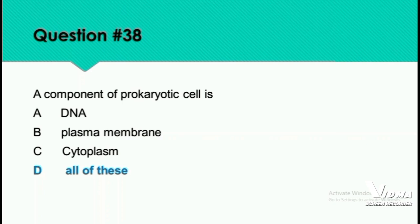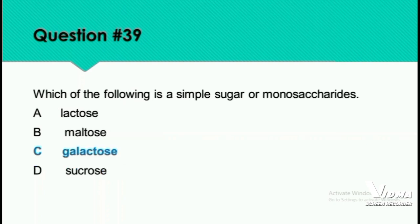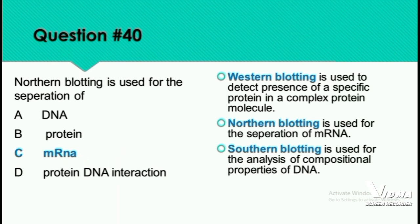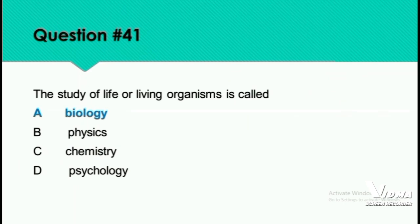Question 39: Which of the following is a simple sugar or monosaccharide? Glucose is a simple sugar — option C. Question 40: Northern blotting is used for the separation of messenger RNA. Question 41: The study of life or living organisms is called biology. Bio means life and logos means study.